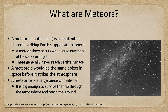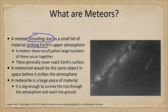So what are meteors? Those are probably one of the most familiar to you. A meteor, sometimes called a shooting star, is a small bit of material that strikes Earth's upper atmosphere. When it does that, it vaporizes. Here we see an example of one of these meteors, streaking through the sky as it struck Earth's atmosphere, leaving a trail behind.